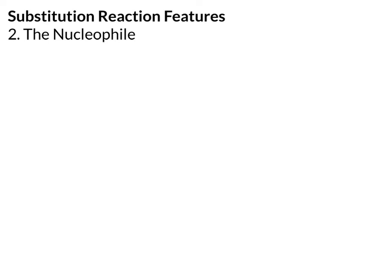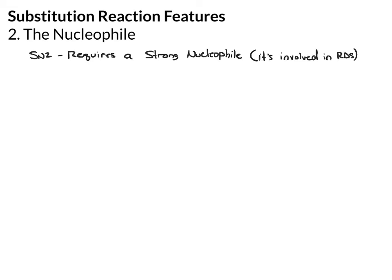The next feature we're going to look at is the nucleophile. The nucleophile is very important because it is nucleophilic substitution, but the nucleophile is most important in the SN2 reaction because SN2 requires a strong nucleophile. The nucleophile is involved in the rate-determining step, and it's the nucleophile that helps in displacing the leaving group.